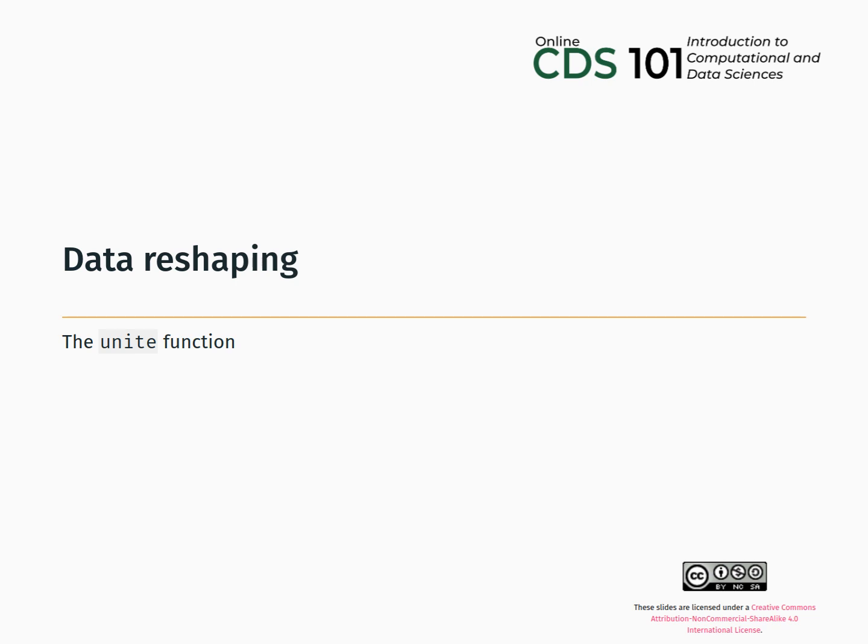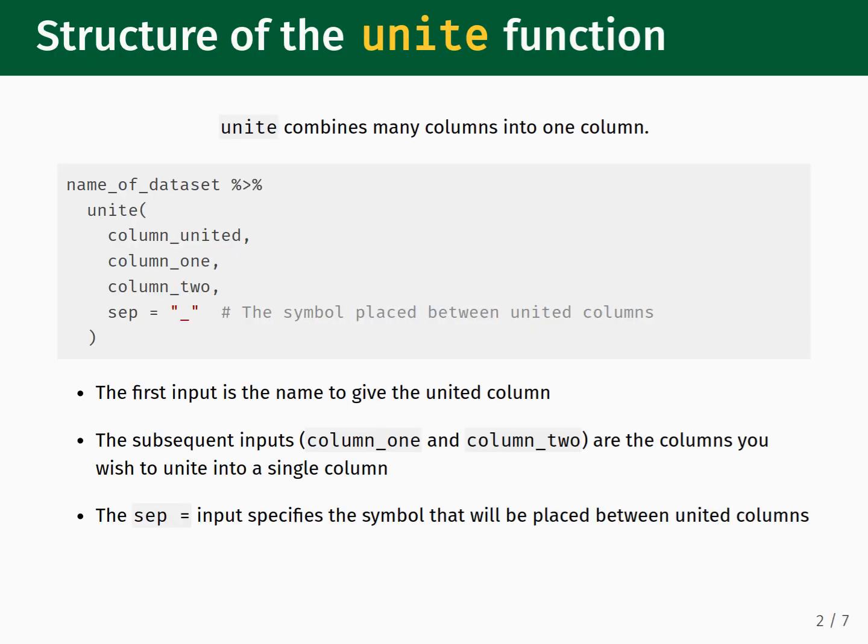Hello, this is Dr. Glasbrenner from George Mason University, and in this video we will learn how to use the Unite function from the tidyr package to combine several columns into a single column. The purpose of the Unite function is to combine data from many columns into one column, which is the reverse of the separate function.